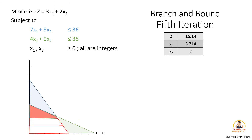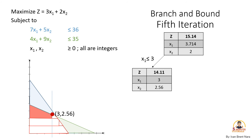For the fifth iteration, branch the problem by selecting an integer value for x1. On the left, we have x1 less than or equal to 3. The new values of the variables are x1 equals 3 and x2 equals 2.56. And on the right, we have x1 greater than or equal to 4. Graphing x1 greater than or equal to 4, we found out that it does not satisfy our constraints, neither does it intersect with our new solution space, which is in red. Therefore, at x1 greater than or equal to 4, the solution is infeasible.